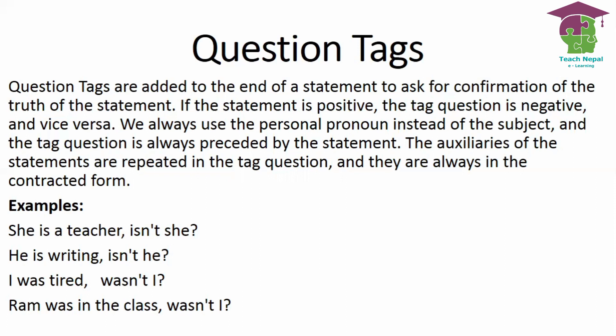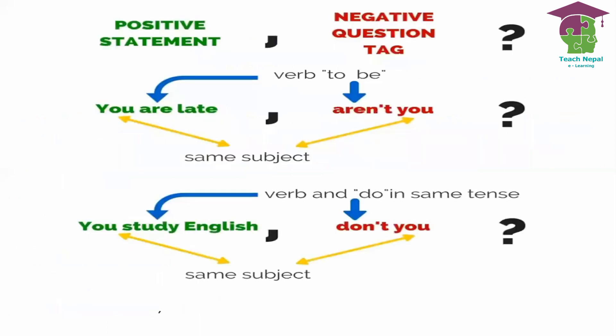For example: 'She is a teacher, isn't she?' and 'He is writing, isn't he?' and 'I was tired, wasn't I?' — all these statements are positive, so the tag questions are negative. You can see how we form these tag questions.